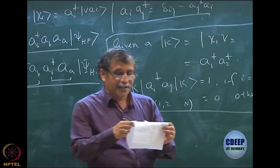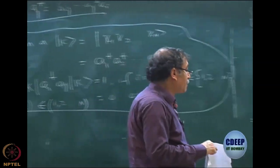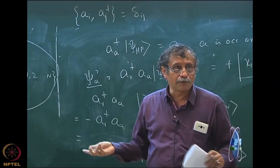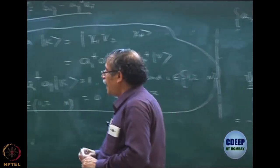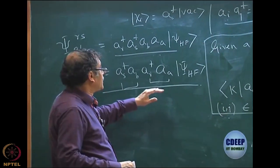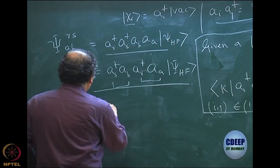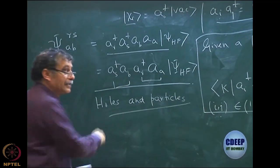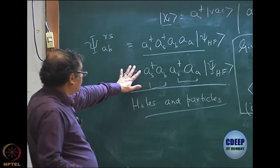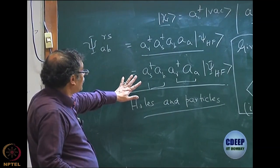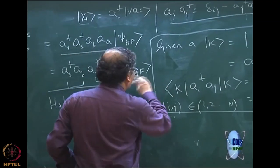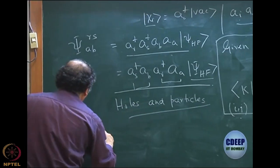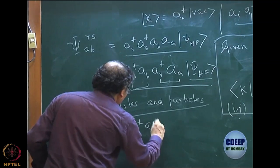I will come back to writing the wave function using holes and particles instead of just electrons — that will simplify the electron correlation problem, but that is a little later. Right now, using the creation and annihilation operators of electrons, I am able to write any wave function. Remember, psi Hartree-Fock itself is a_1-dagger, a_2-dagger, ... up to vacuum. If you really write it in terms of the vacuum, it has these operators, then a_S-dagger, a_B, a_R-dagger, a_A, where A and B belong to the occupied subspace and R and S do not.